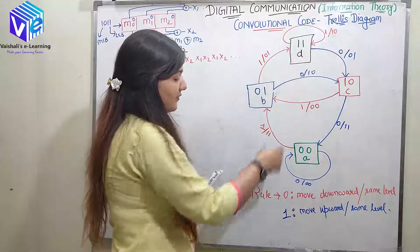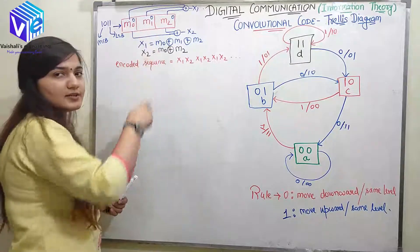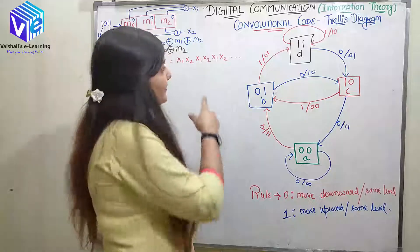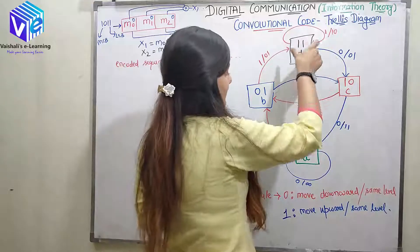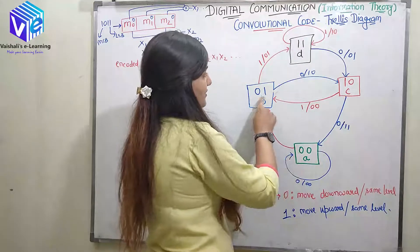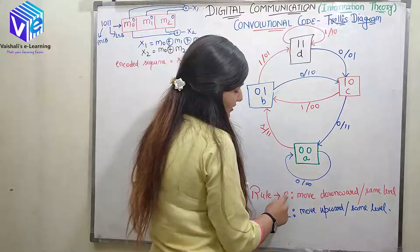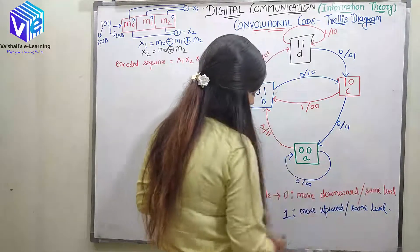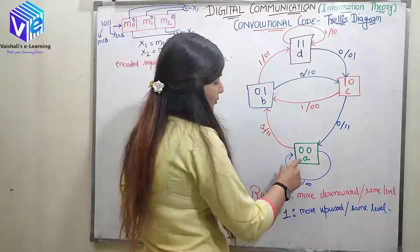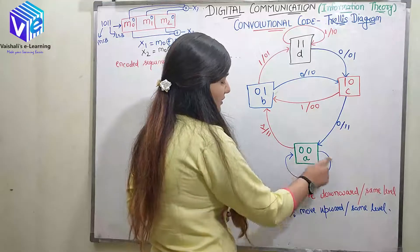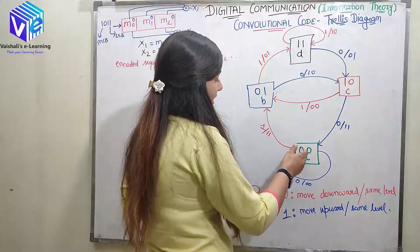For a quick revision: I took four states because the encoder is represented by three shift registers, so the number of states was 2 raised to the power 3 minus 1, which is 2 raised to power 2, which means 4. These four states are represented as: A is 00, B is 01, C is 10, D is 11. The basic rule was: when the input is 0, move downward or stay at the same level, and when the input is 1, move upward or stay at the same level.